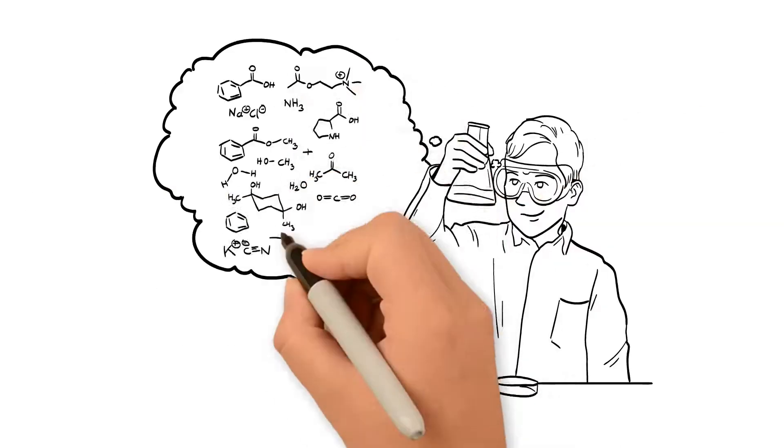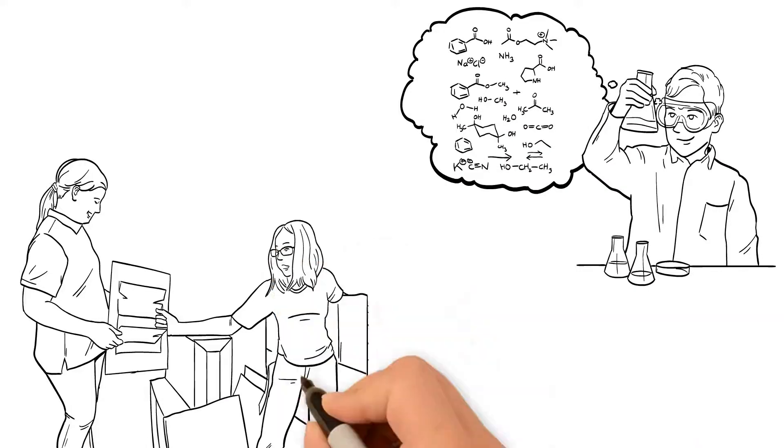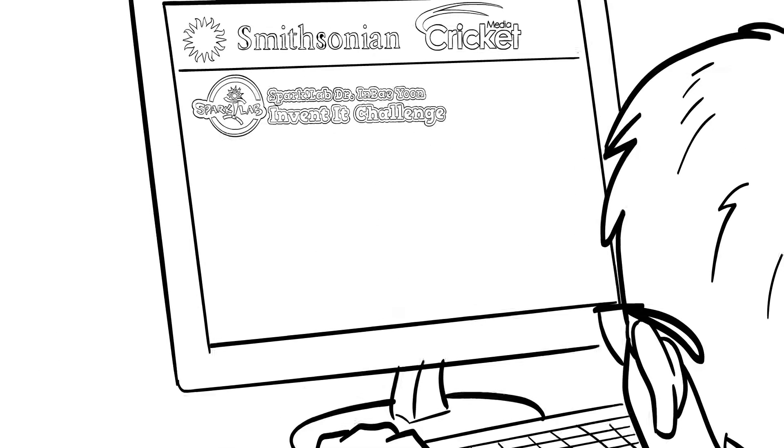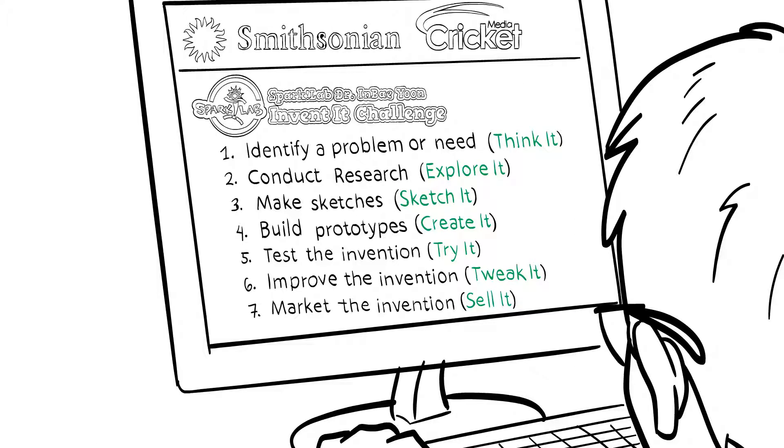You don't have to be a genius to win. It's not even important that your invention is fully functional. What is important is that you complete all seven steps of the invention process and show us how you thought deeply about your idea.